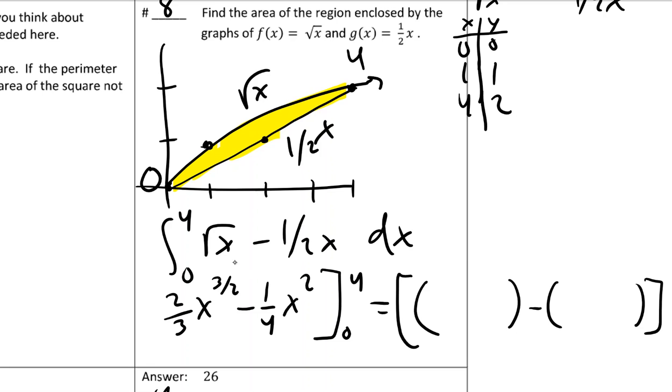When you plug in four here, you might think you need a calculator on this, but you shouldn't, because four to the one half is like the square root, so this would be two, and two to the third power would be eight times two-thirds, which would be sixteen-thirds. And then plug in four over here, you would get sixteen-fourths, which would be at one-fourth.